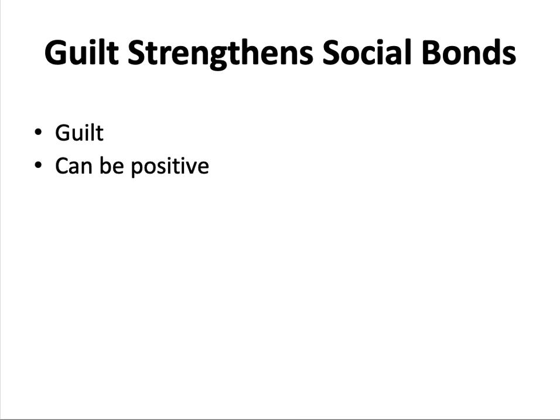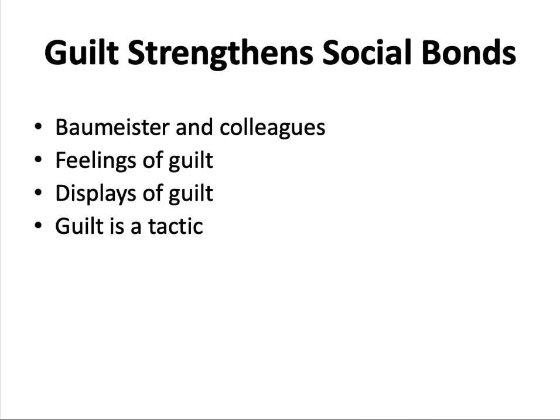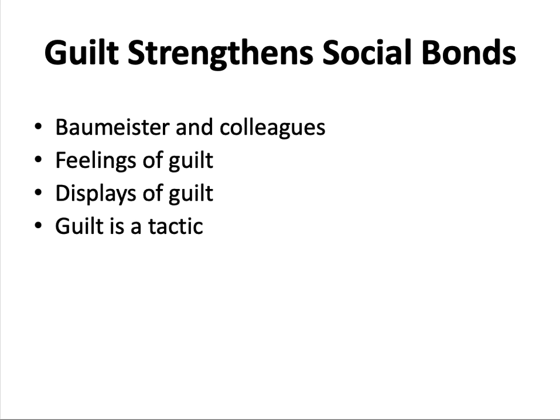Guilt strengthens social bonds. Guilt is a negative emotional state associated with anxiety, tension, and agitation, typically occurring when someone feels responsible for another person's negative affective state. Although excessive feelings of guilt may have negative consequences, guilt is not entirely negative. Baumeister and colleagues contend that guilt protects and strengthens interpersonal relationships in three ways: feelings of guilt discourage people from doing things that would harm their relationships, displays of guilt demonstrate that people care about their relationship partners thereby affirming social bonds, and guilt can be used as a tactic to manipulate others. Evidence indicates that socialization is more important than biology in determining how children experience guilt, and parental warmth is associated with greater guilt in children.